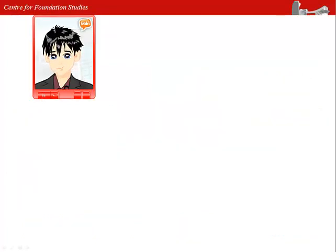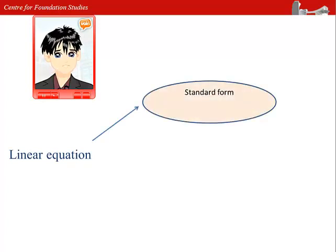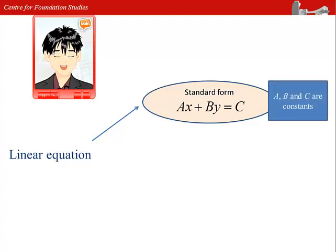Linear equations can be written in 3 different forms. The first one is the standard form: ax plus by equals to c, where a, b and c are constants.